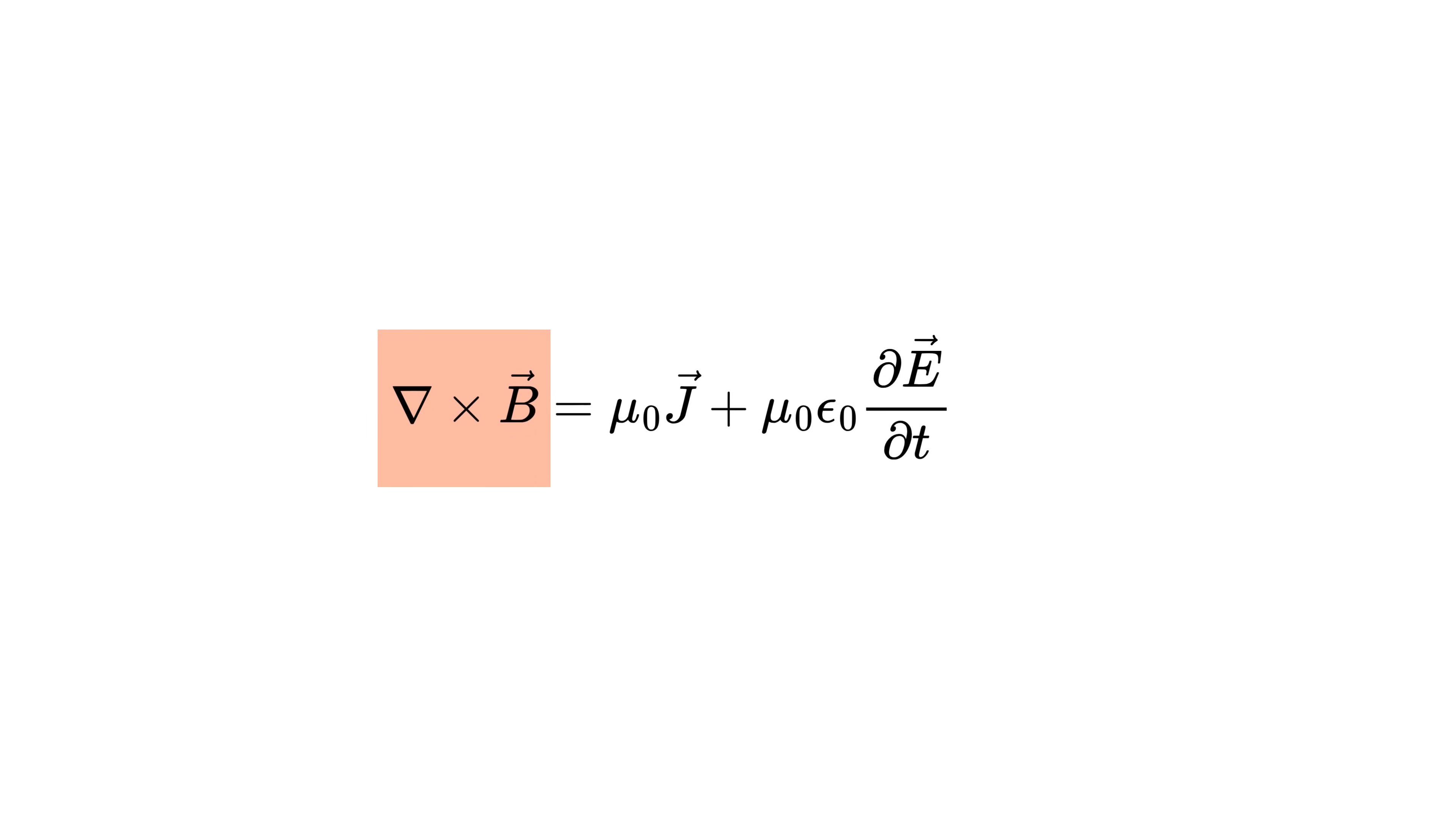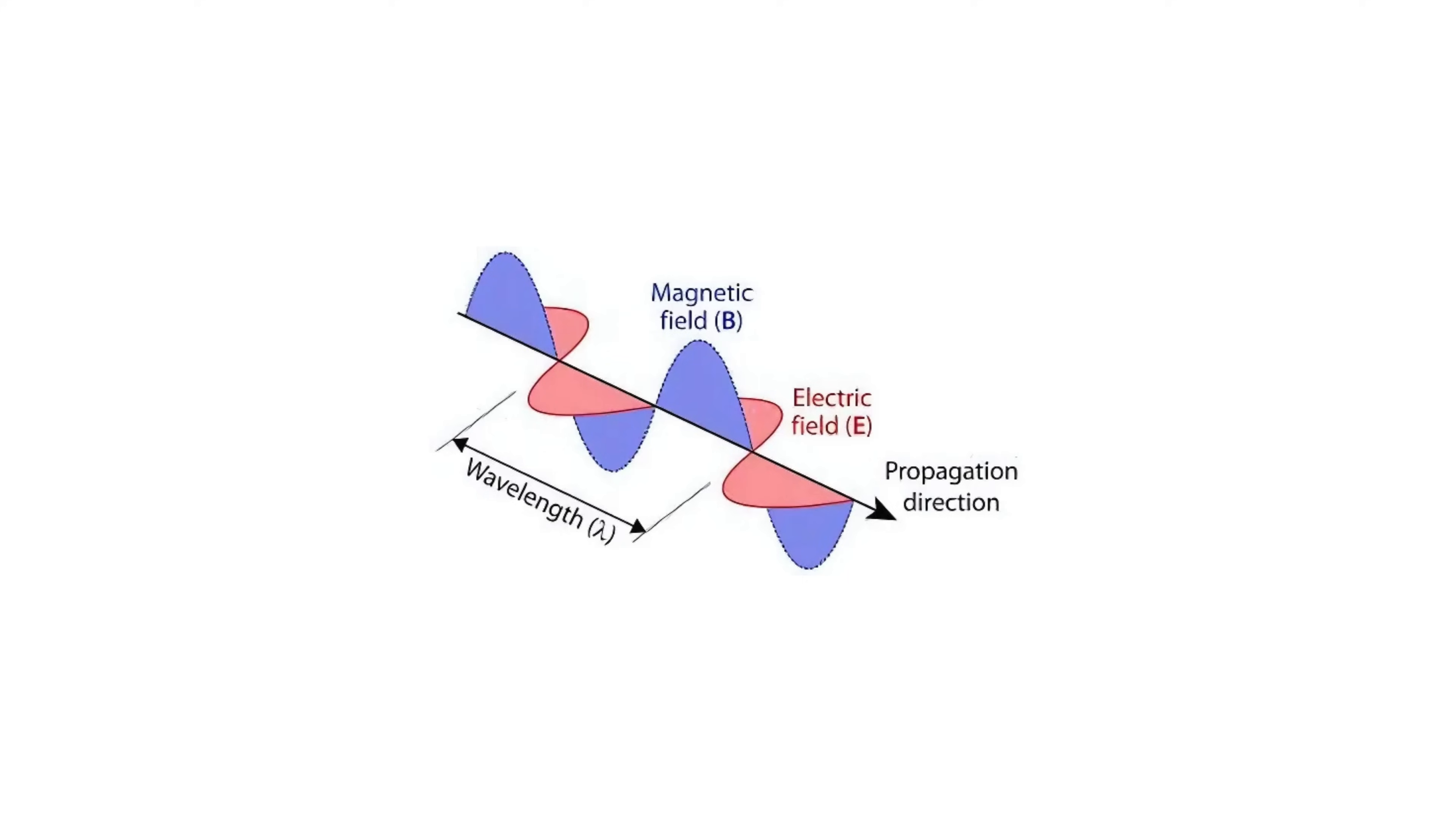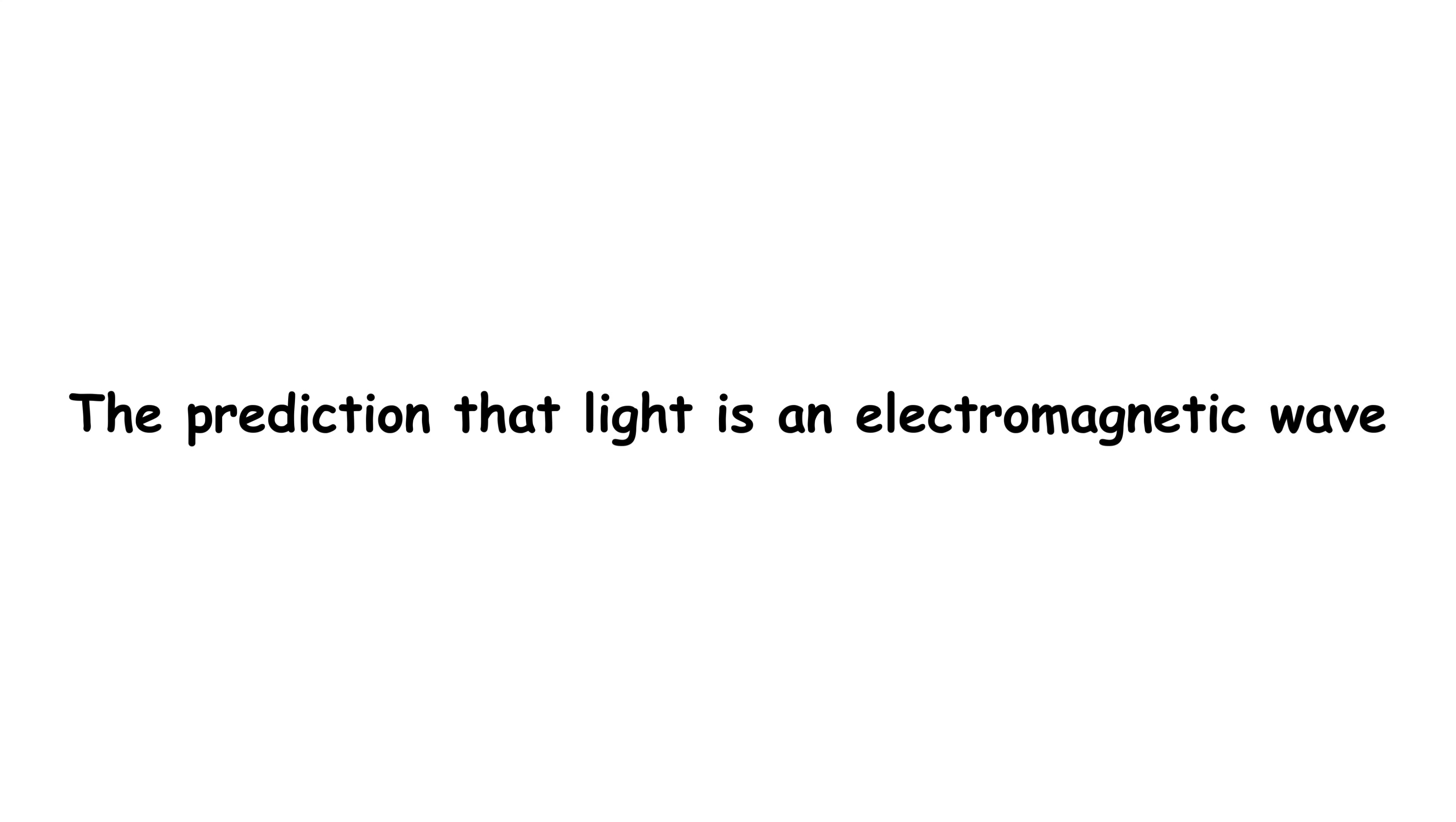The curl of the magnetic field B is equal to mu naught, which is the magnetic permeability of free space, times the current density j, plus mu naught times epsilon naught, which is the vacuum permittivity, times the rate of change of the electric field E with respect to time. These describe how electric field and magnetic field fields generate and modify each other. The prediction that light is an electromagnetic wave was one of its most notable consequences.